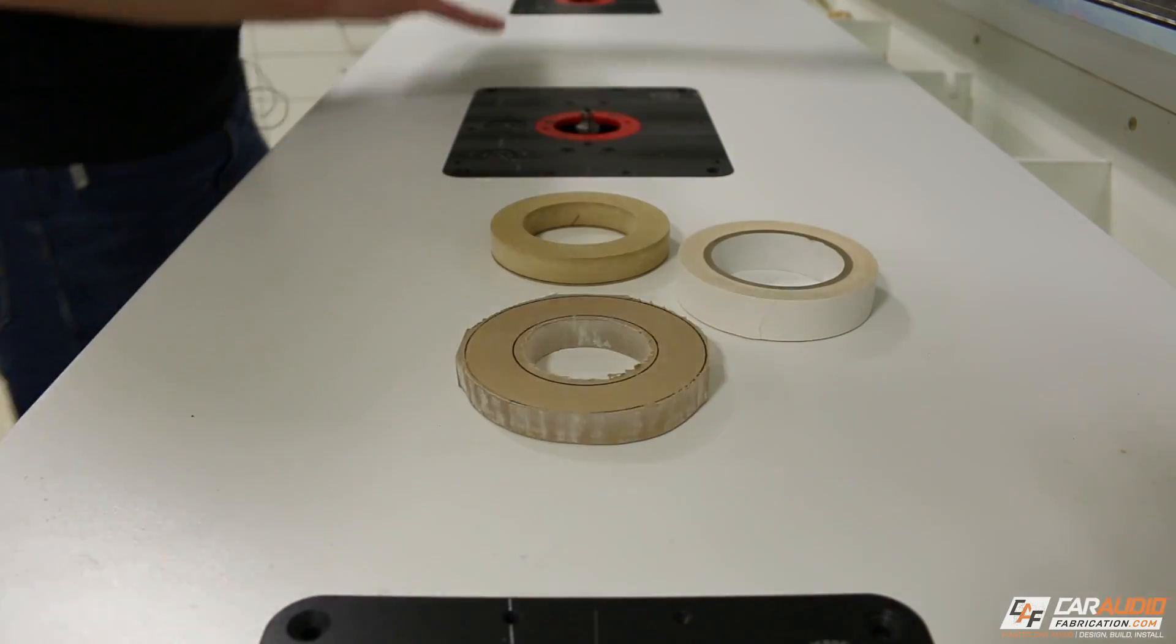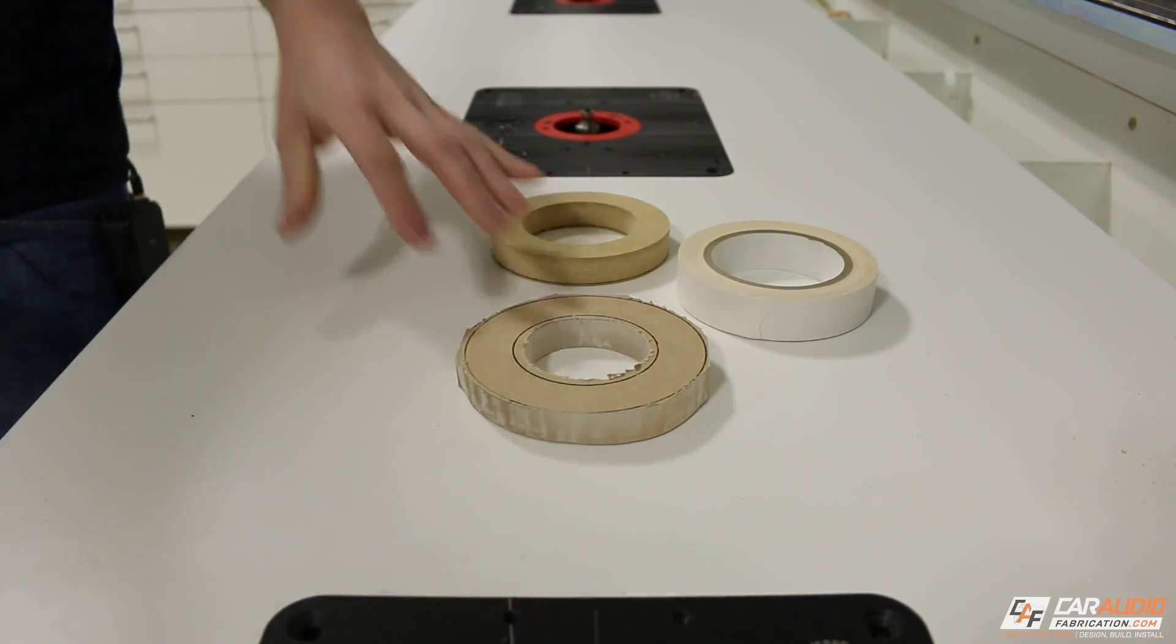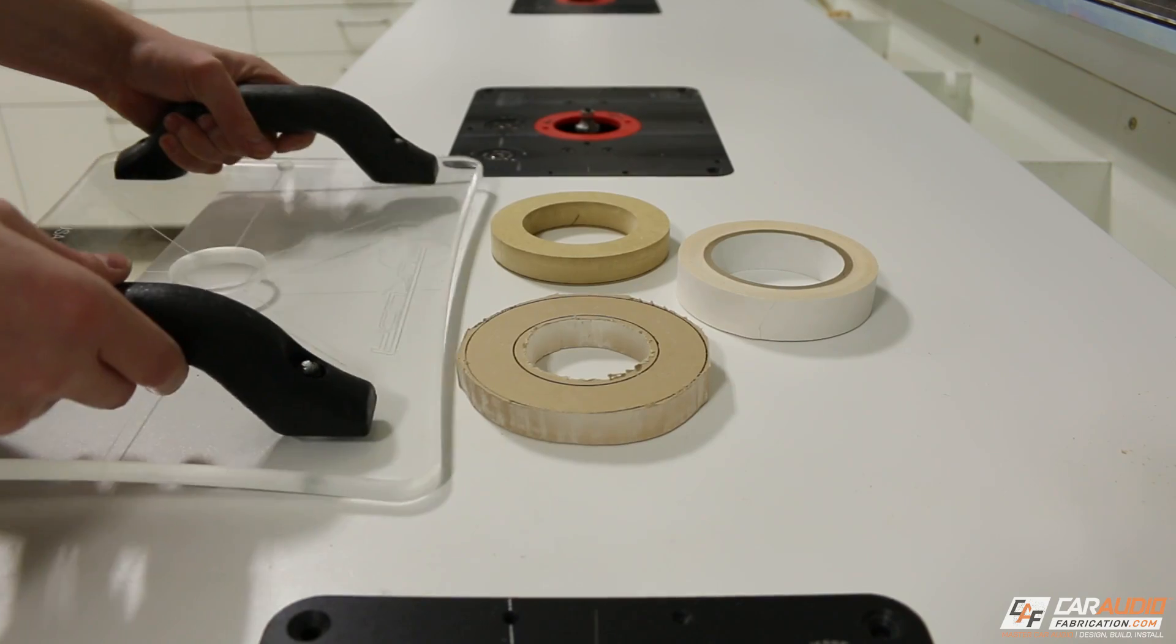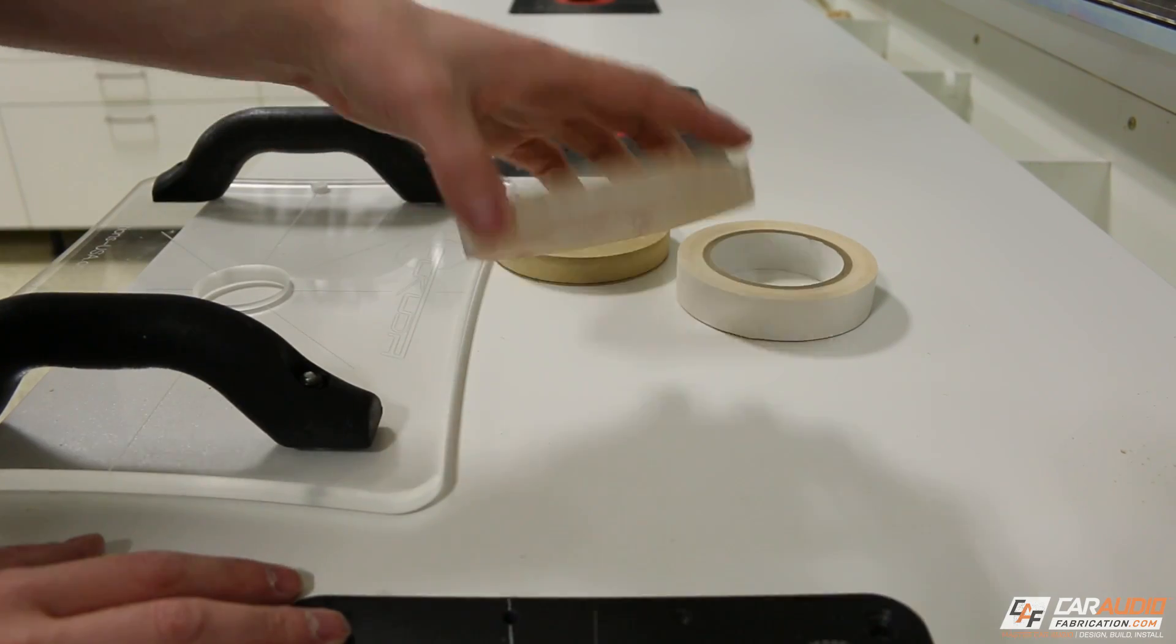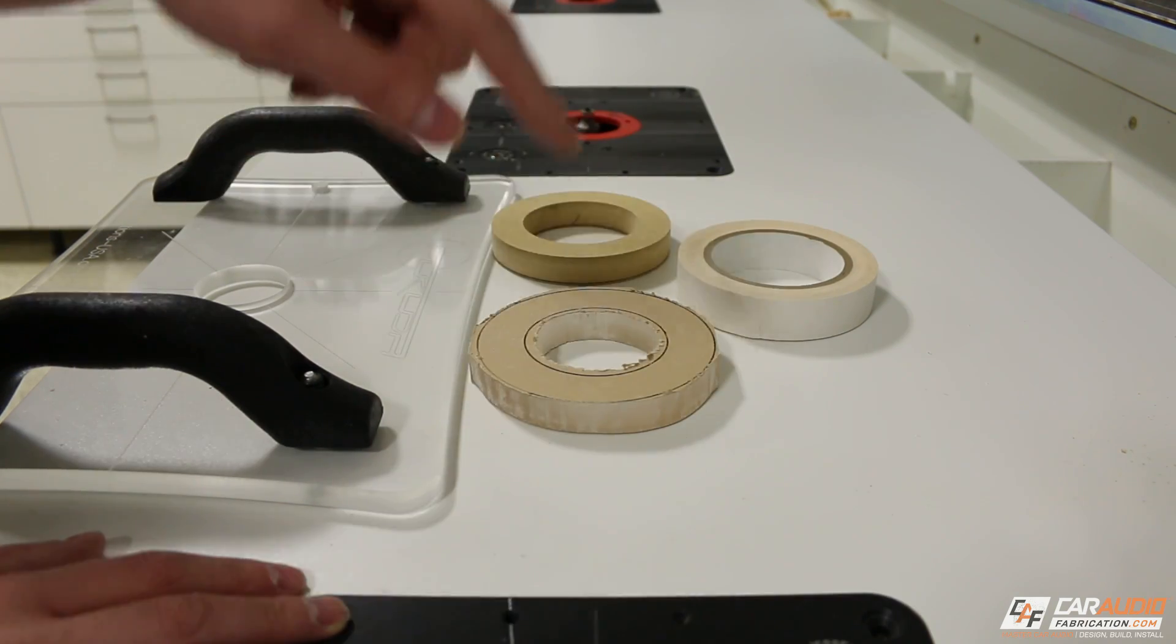We've got our acrylic ring, we've got our wooden ring, we also have some one-inch template tape here, and there's one more thing that I really, really suggest if you're going to be cutting acrylic is a router shield. Links to this and all the different specialized stuff that I'm using in this video are down in the video description.